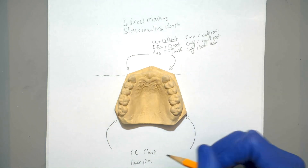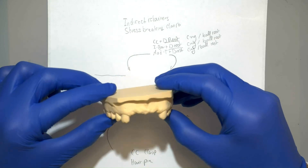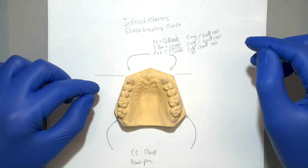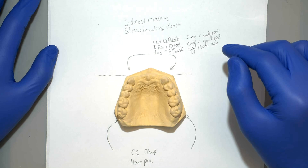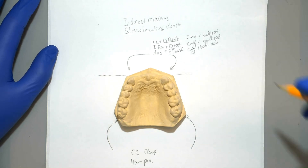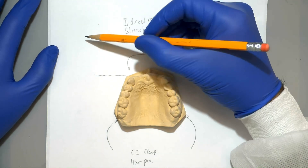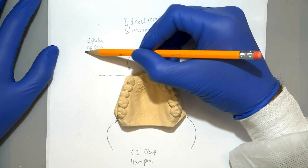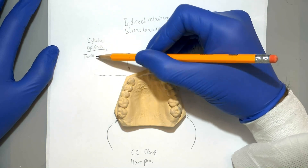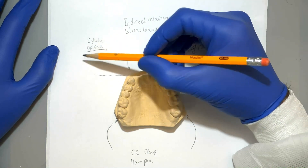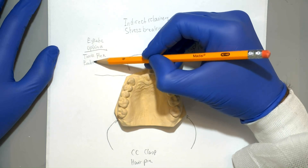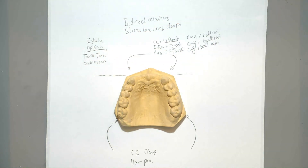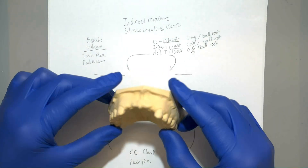Now there are priorities when doing class 4 RPDs and the priority is aesthetics. So we might use some different clasps here to make this case more aesthetic, and we'll leave a link in the description for a video that talks about this. Some of these aesthetic clasps are twin flex clasps or using an embrasure clasp in the posterior and avoiding anterior clasps.